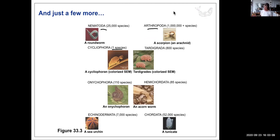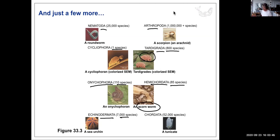Cycliophora has only one species. Tardigrada: 800 species — the water bears, which are really cool. Hemichordata: 85 species, the acorn worm, which has a well-developed nervous system used to study the human nervous system. Echinodermata — spiny-skinned organisms like sea stars and sea urchins — about 7,000 species. Chordata we'll do another day.